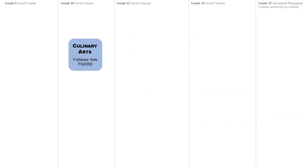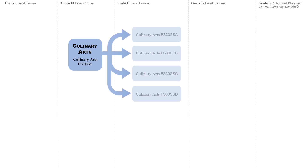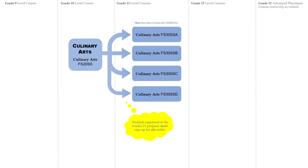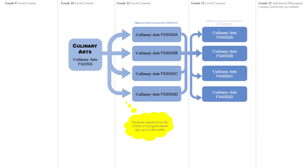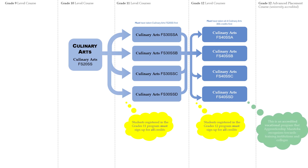Culinary Arts is an optional course that can be taken starting in Grade 9 or 10. A cluster of Grade 11 courses must be taken in this program. Grade 12 courses are also mandatory in this program based on the prerequisite cluster. This is an accredited vocational program that Apprenticeship Manitoba recognizes towards training institutions and colleges.